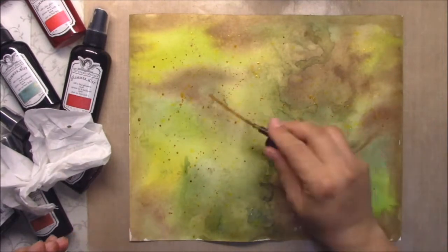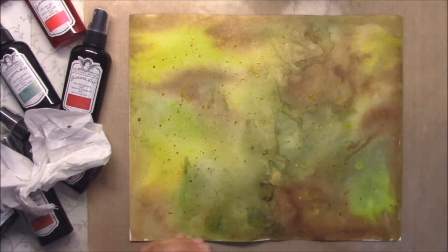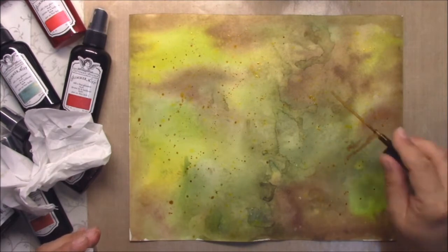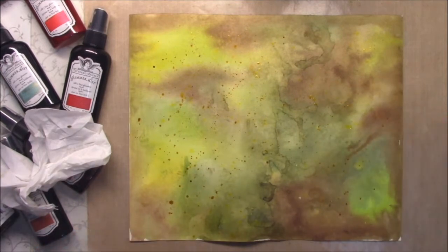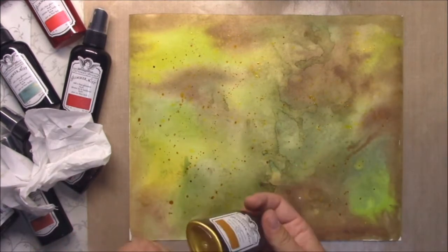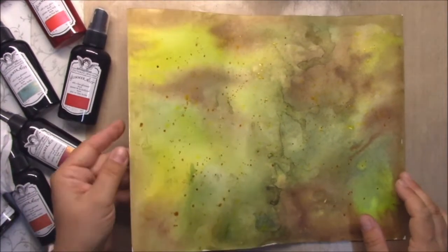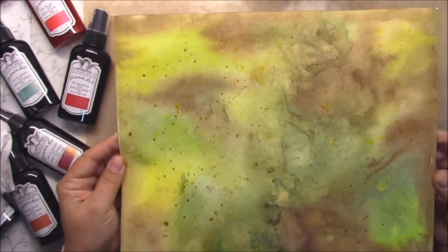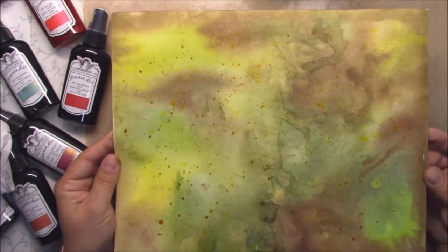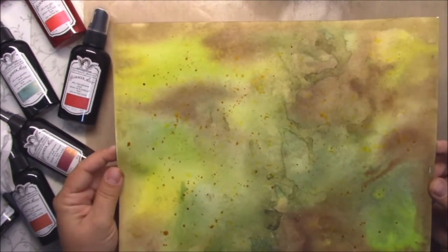You can combine different Tattered Angel sprays. I like that Glimmer Mist has got the glimmer inside so it's nice. I will set it aside and I will cut leaves from it later.